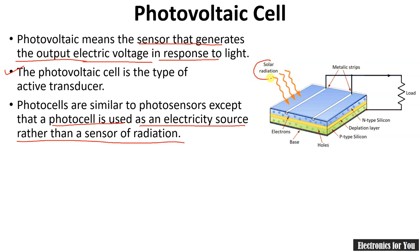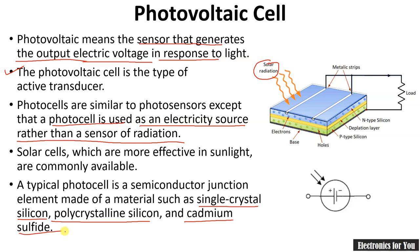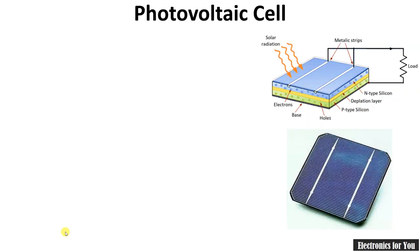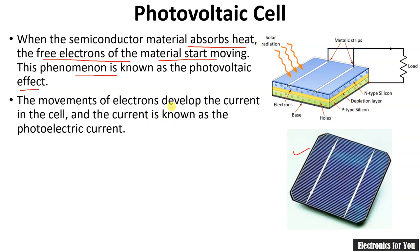When solar radiation falls on the solar plate, it creates electrical energy. When semiconductor material absorbs light, the free electrons of the material start moving — this phenomenon is known as the photovoltaic effect. The movement of electrons develops current in the cell, known as photoelectric current. This is the symbol for the photovoltaic cell or solar cell, and a single piece of solar cell looks like this.